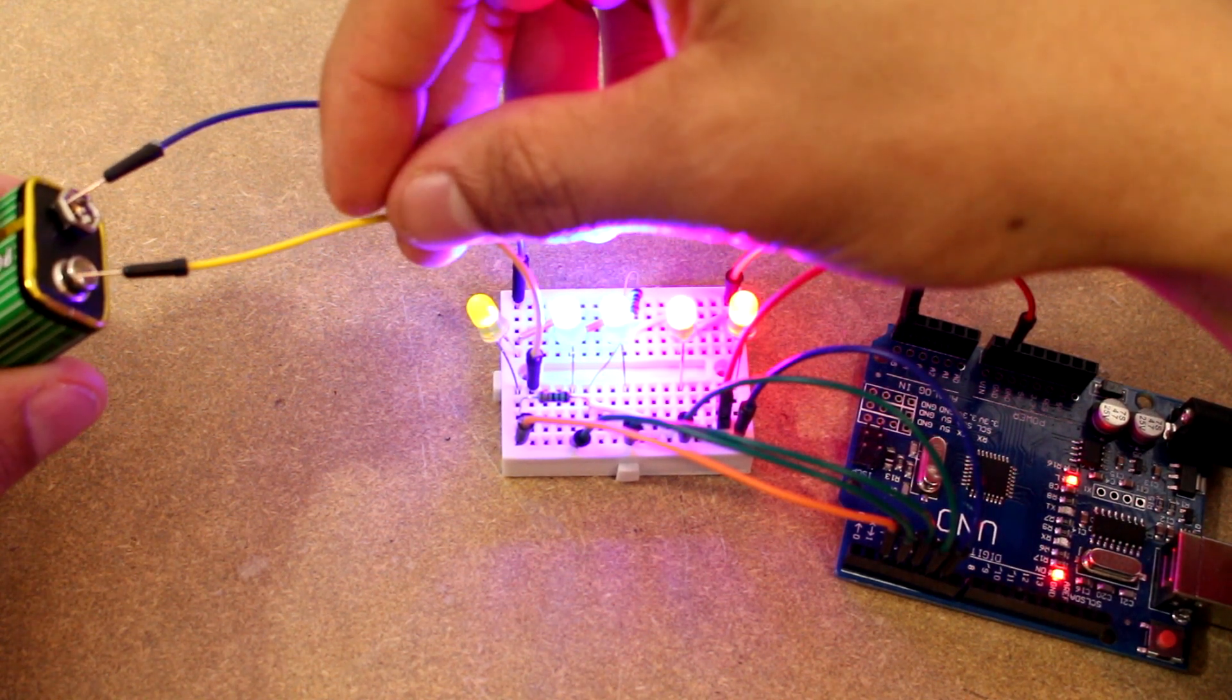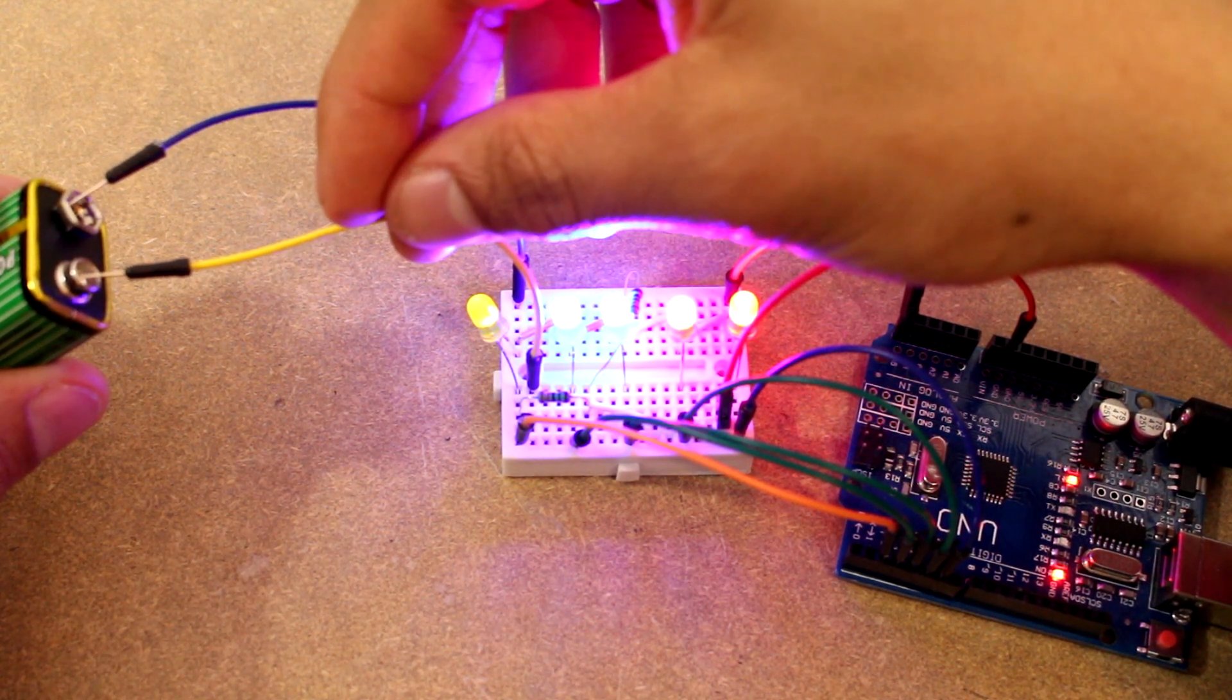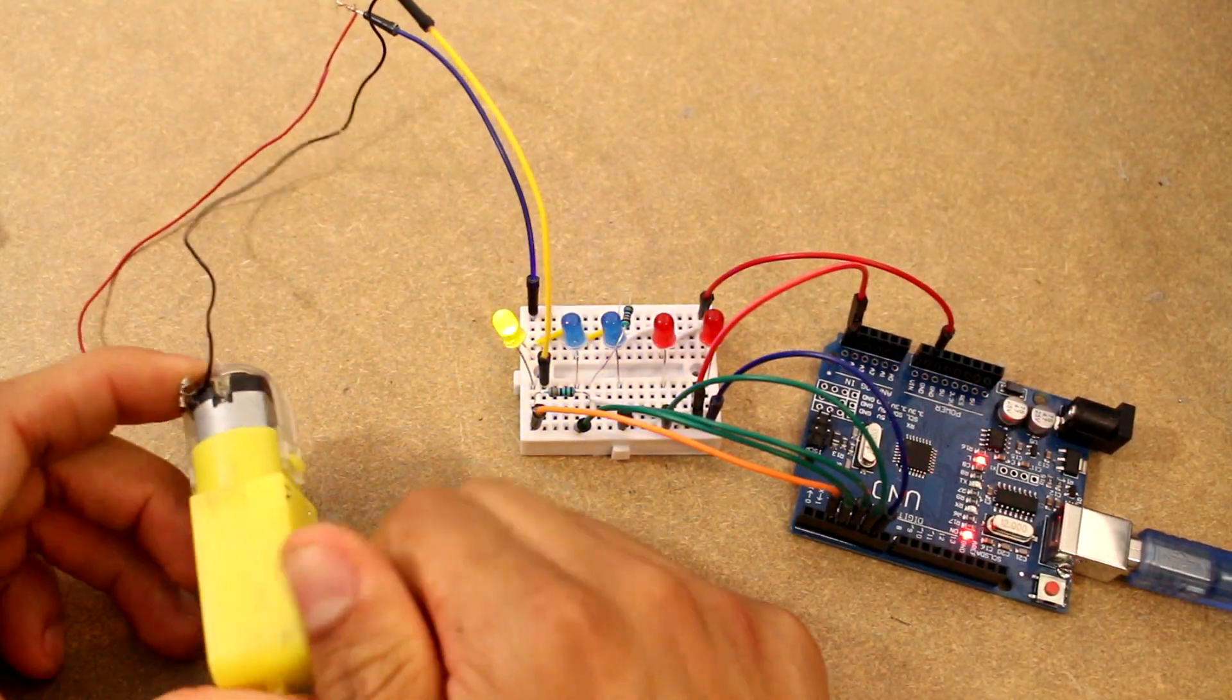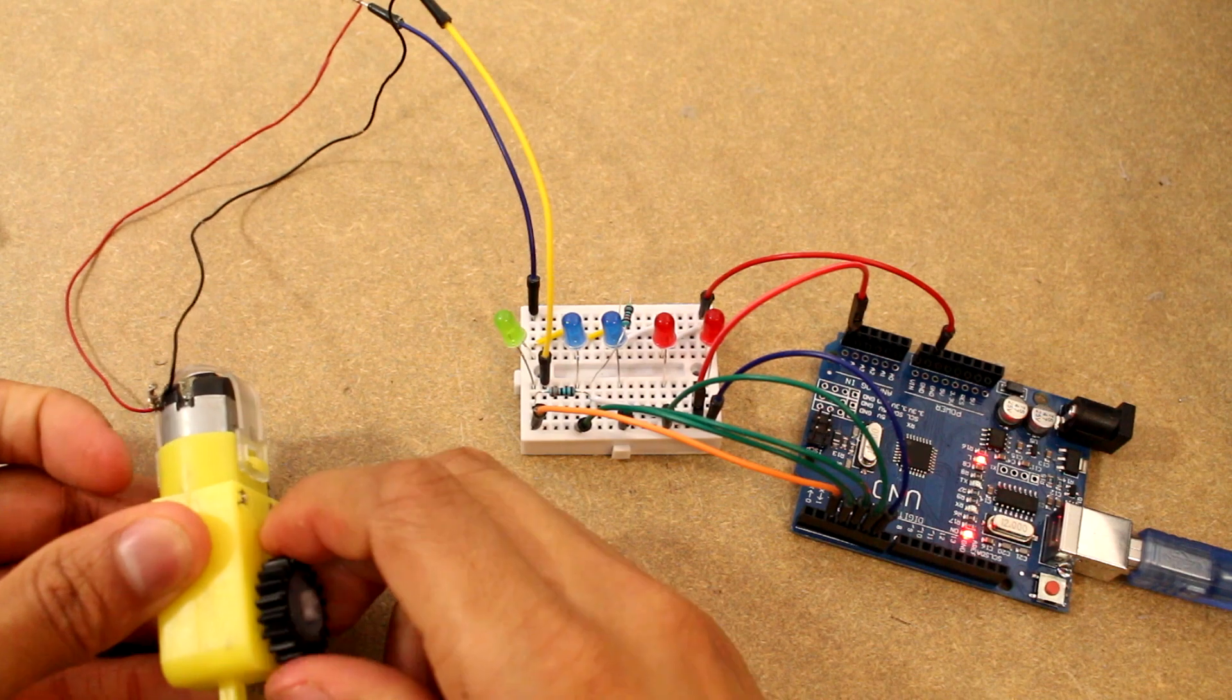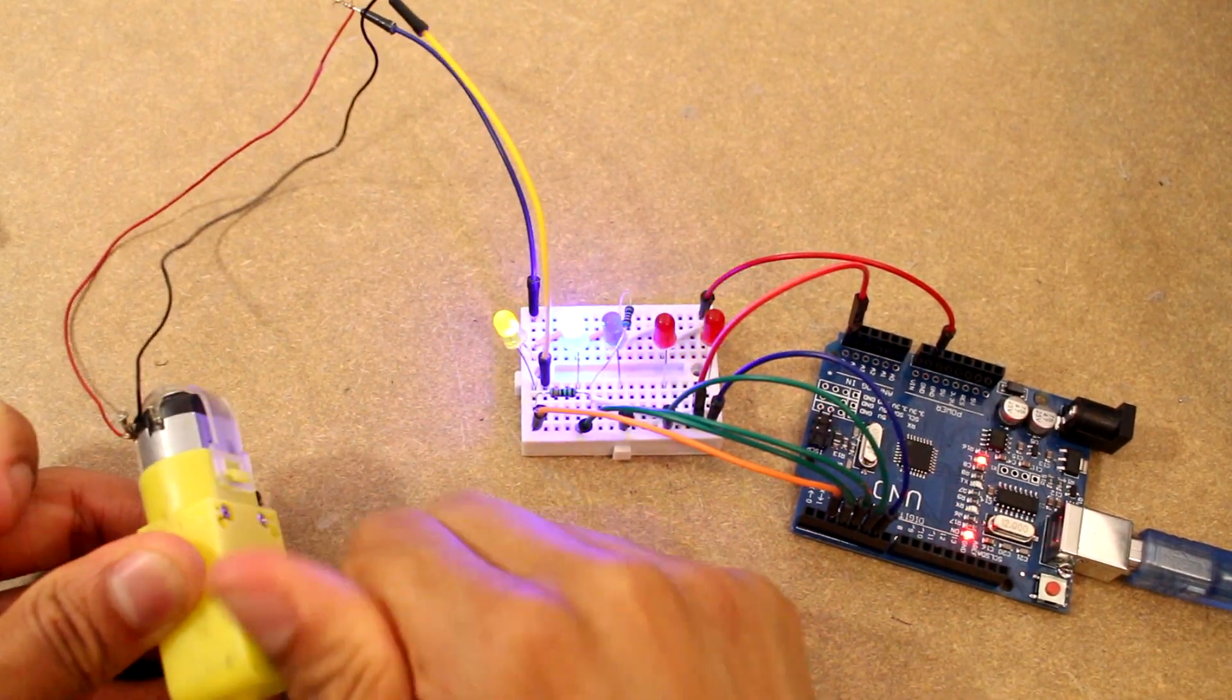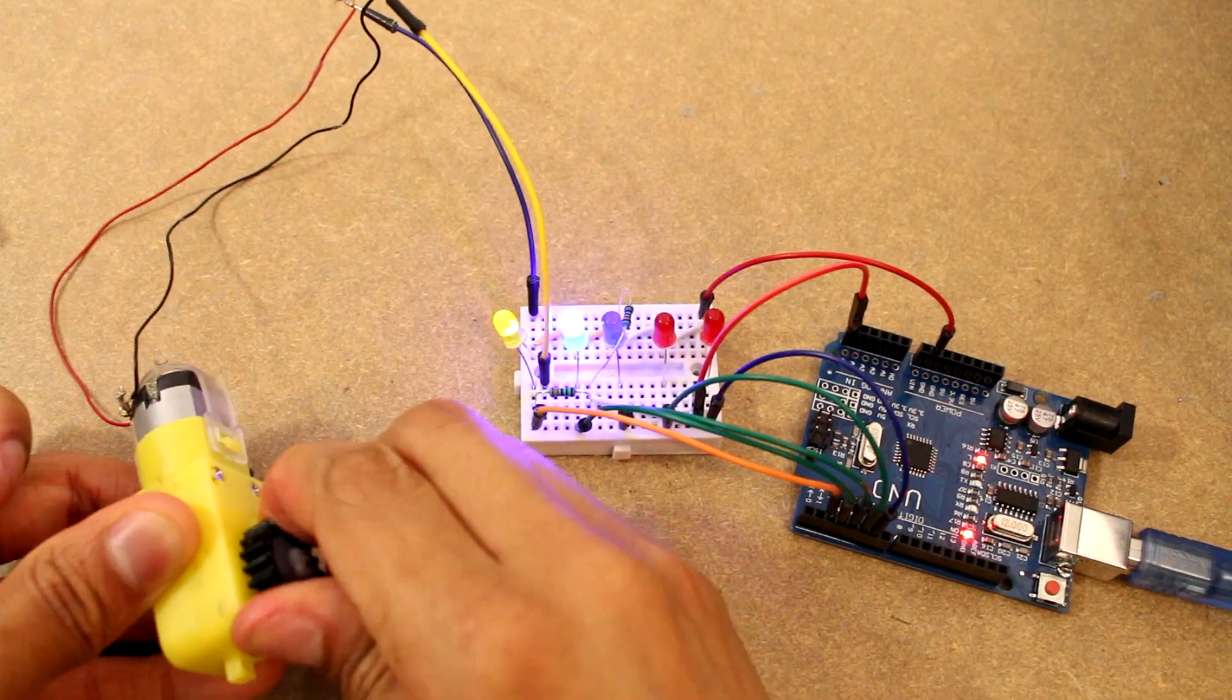And then we can also use a DC motor to generate electricity by spinning it. So you can see the faster we spin it the more lights go on. Thanks for watching.